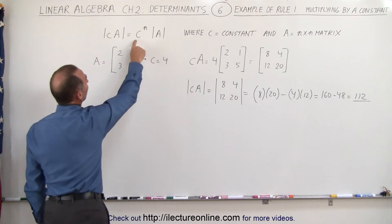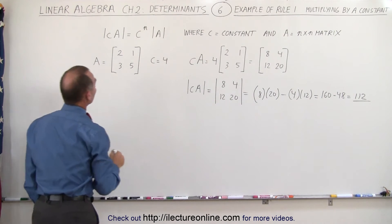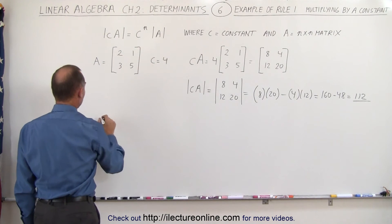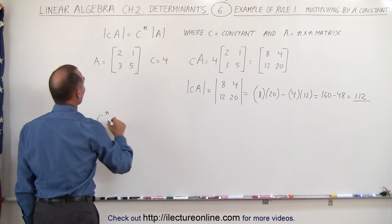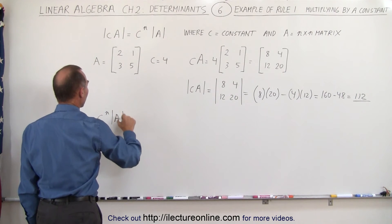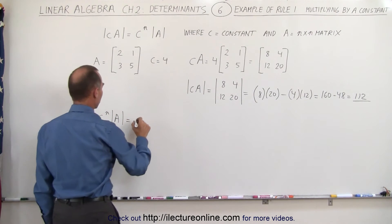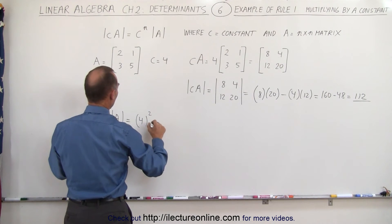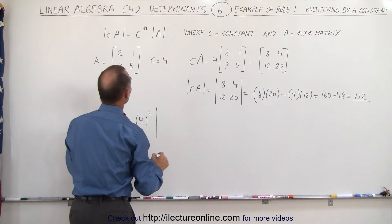So now let's go ahead and work out this part of the equation. So C to the n power, since n is equal to 2, we have the right side here. We have C to the n multiplied times the matrix of A is equal to, here we get 4 raised to the second power. And we're going to multiply that times the determinant of A.